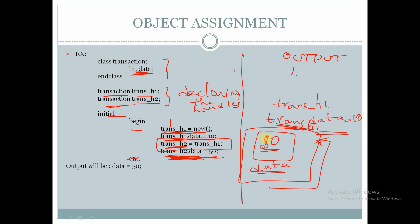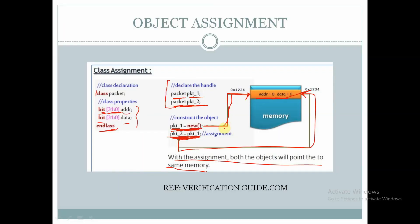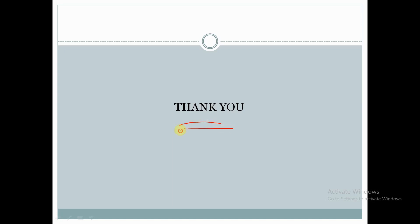the existing data will be deleted and new data will be updated — 10 will be updated to 50. So the output data will be 50. This is about object assignment: the two handles will be pointing to the same memory. Thank you for watching this video.